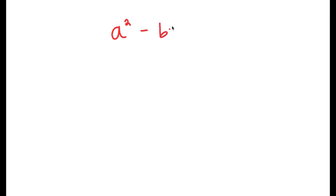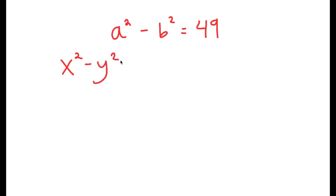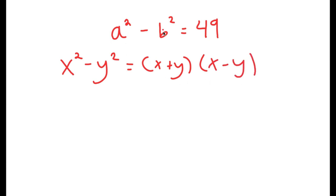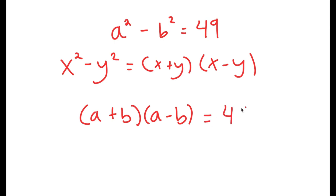In this video, I'm going to solve the equation a squared minus b squared is equal to 49. To solve this, I'm going to use the property that states that if I have something in the form x squared minus y squared, this is equal to x plus y times x minus y. In this case, a squared minus b squared — a is x and b is y — so this turns into a plus b times a minus b is equal to 49.